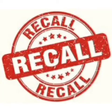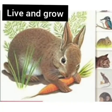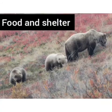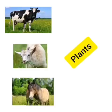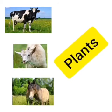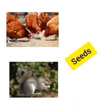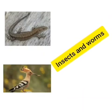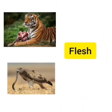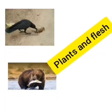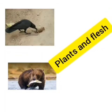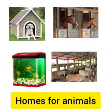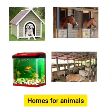Let us recall what we have learned in this lesson. Animals need food to live and grow. They move from one place to another in search of food and shelter. Some animals eat only plants, some eat seeds, some eat insects and worms, some eat the flesh of other animals, and some eat both plants and flesh of other animals. Some animals make their own homes, while we make homes for animals that we keep with us.